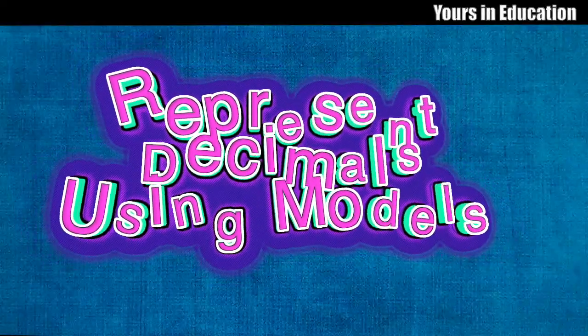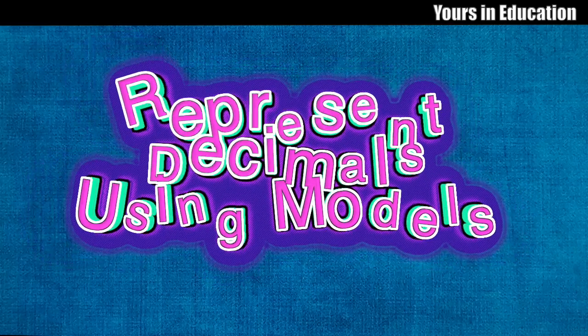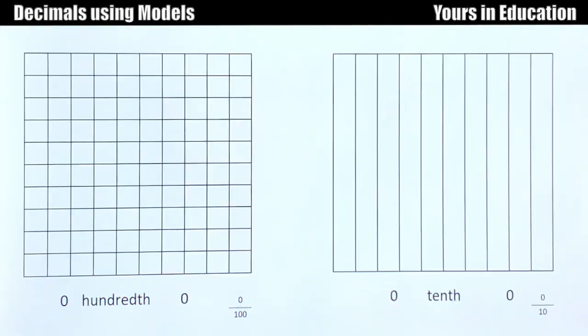Welcome back math experts, on this lesson we're going to learn how to represent decimals using models. We have two models that if they were filled out would be one whole on the left side and one whole on the right side. What do you notice about these models? How are they different?